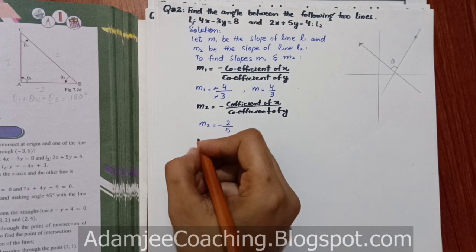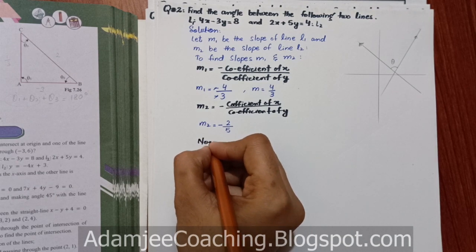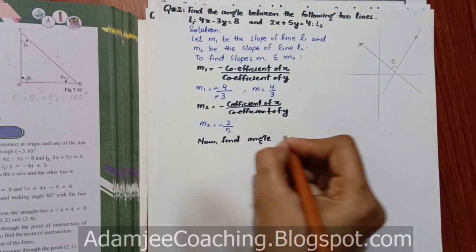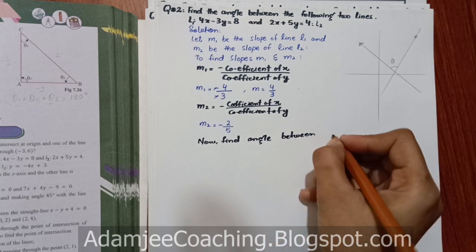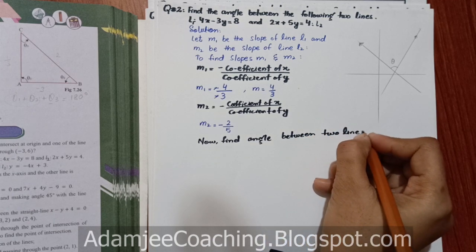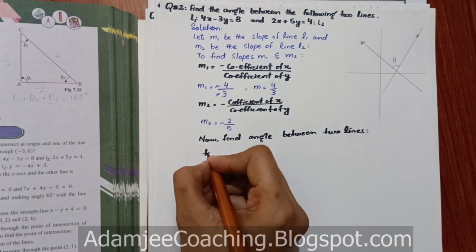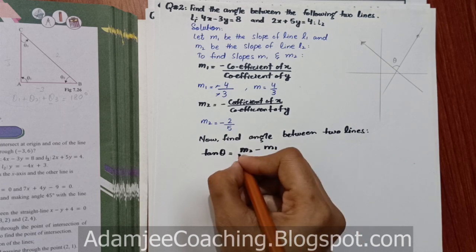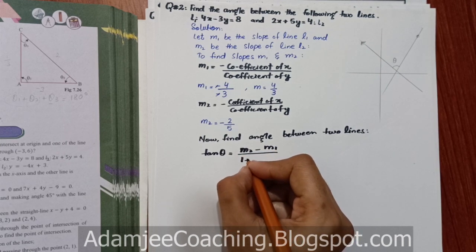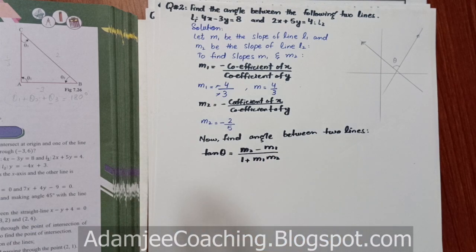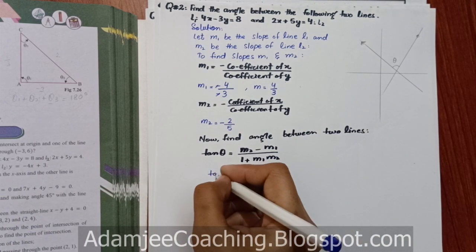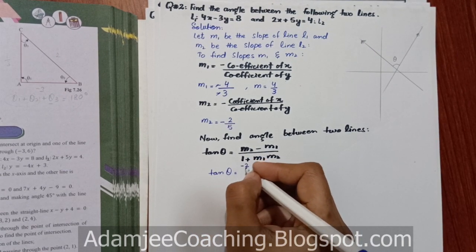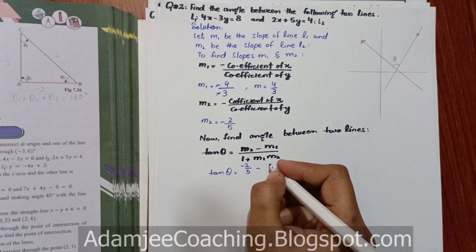Now find angle between two lines. If angle is to be found between two lines, the formula is tan theta equals to M2 minus M1 divided by 1 plus M1 M2.